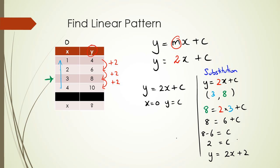If we extend the table back to x = 0 and use the same difference of 2, then from 4 we go back by 2, which gives y = 2 when x = 0. So we can write the equation straight away as y = 2x + 2. Pick whichever method is easier for you and go with it.